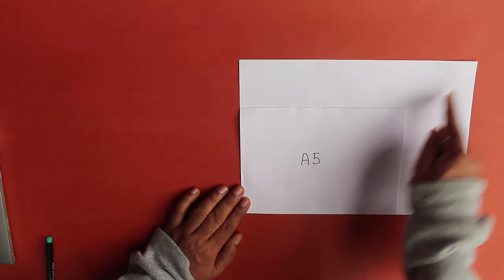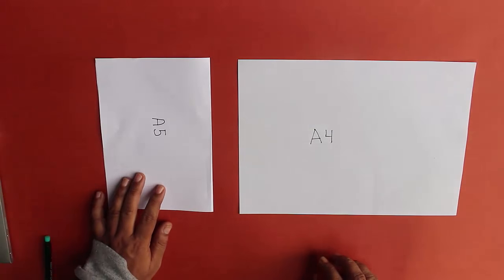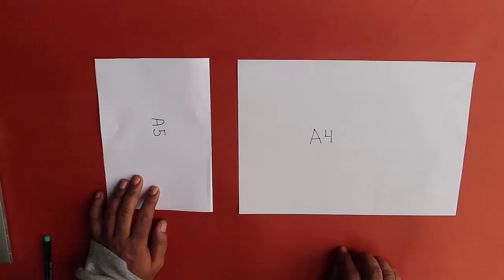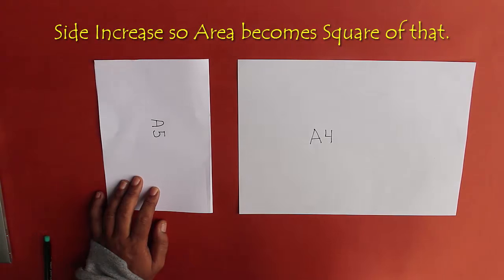It has been zoomed and increased. Both sides have been increased by the same amount because the ratio is exactly the same. And whenever the sides are increased the area becomes square of that. So whenever the sides are doubled the area becomes four times.